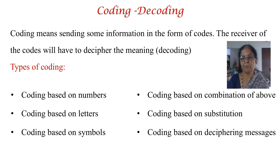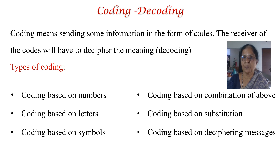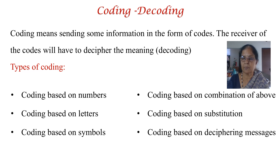In coding, there is always a sender and a receiver. The sender sends information in the form of codes and may use different forms of coding — numbers for coding, letters or alphabets for coding, symbols, images, pictures, or sometimes a combination of all of the above.